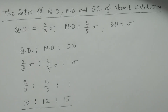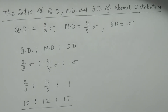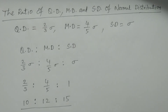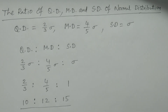For example, if you consider 37 units total: 10 units correspond to quartile deviation, 12 units to mean deviation, and 15 units to standard deviation. This is the ratio of quartile deviation, mean deviation, and standard deviation — 10 to 12 to 15. Thank you very much.